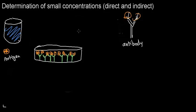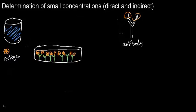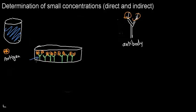This is a good way to determine small concentrations, because I can have a million of these antibodies and detect very small concentrations of these antigens. Now I pour out the remaining solution, and these antigens — if they exist, if my molecule of interest exists — are going to stay stuck to my antibody.